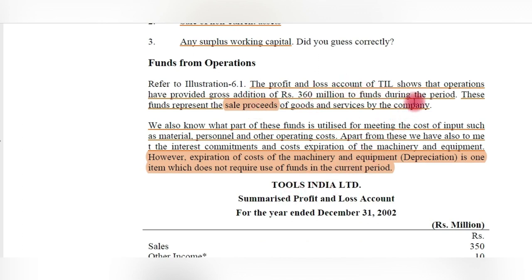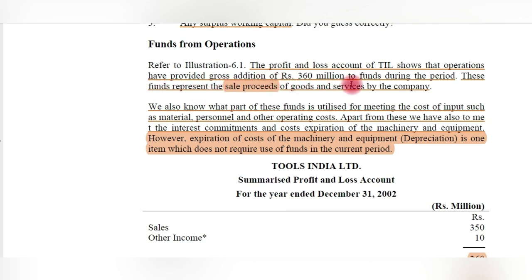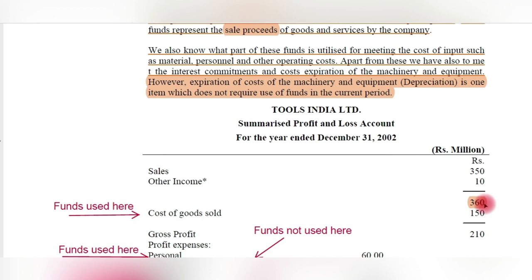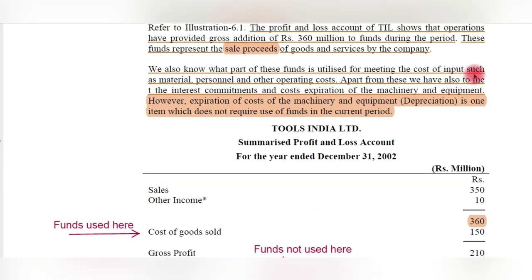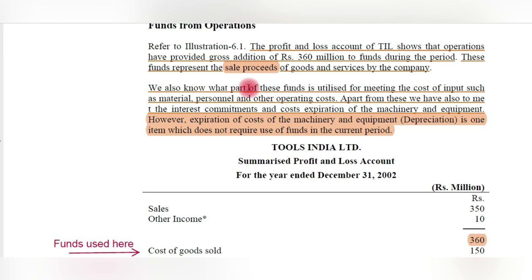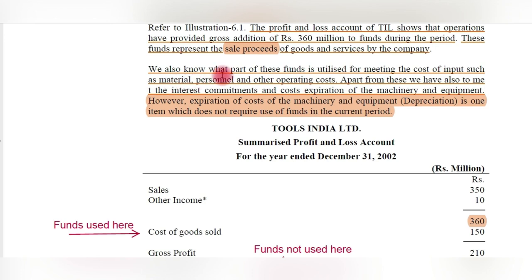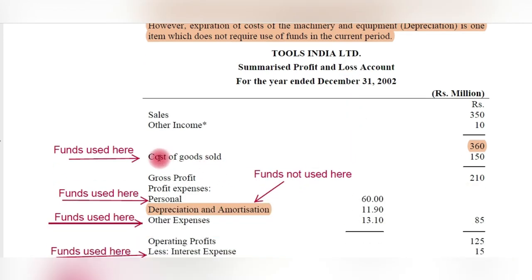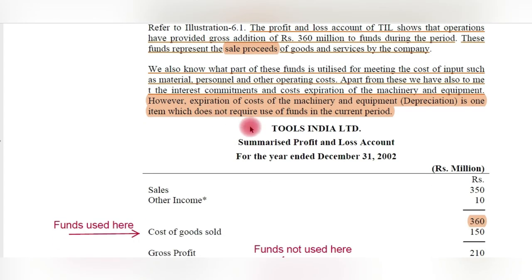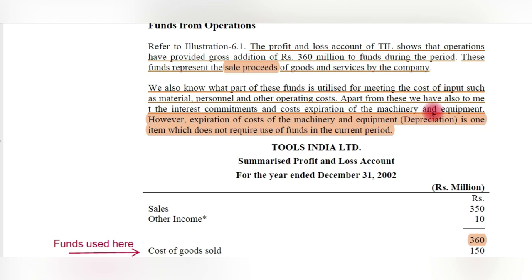Now we will see an example. The profit and loss of T Tools India Limited shows that operations provided a gross addition of 360 million rupees to funds during the period — meaning 360 million rupees is the cash generated by sales revenue. These funds represent sale proceeds of goods and services. We also know that part of these funds is utilized for meeting the cost of inputs such as material, personnel, and other operating costs — the input cost here is 150 million rupees.